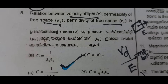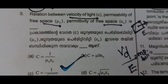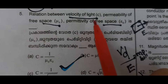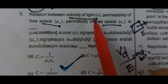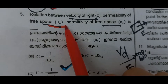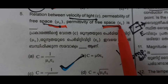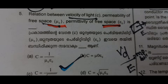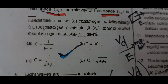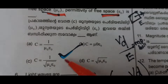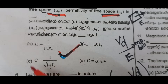What is the relation between the velocity of light, permeability of free space (μ₀), and permittivity of free space (ε₀)? The relation is: c = 1/√(μ₀ε₀).